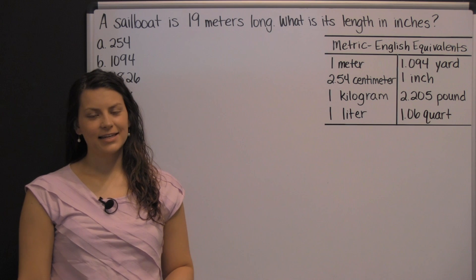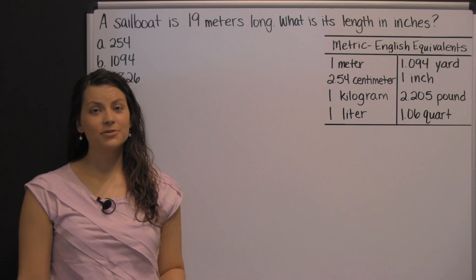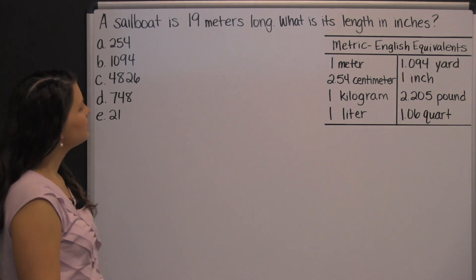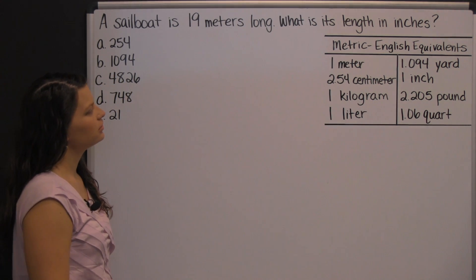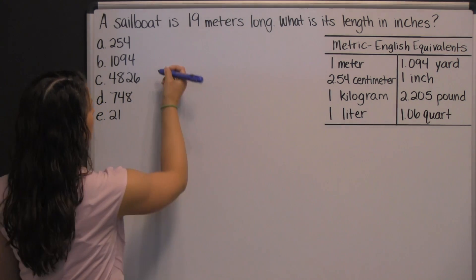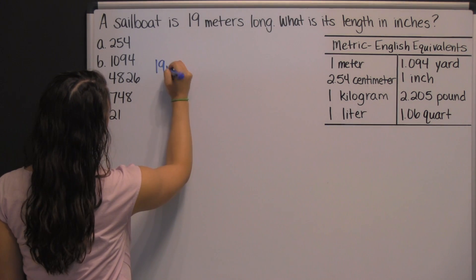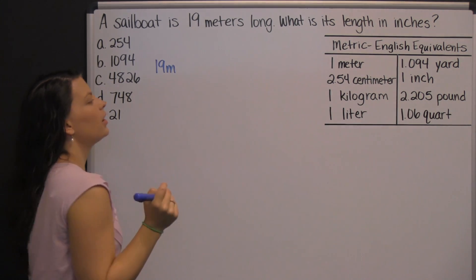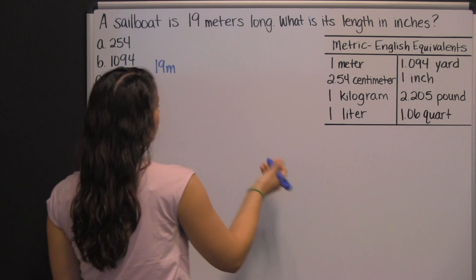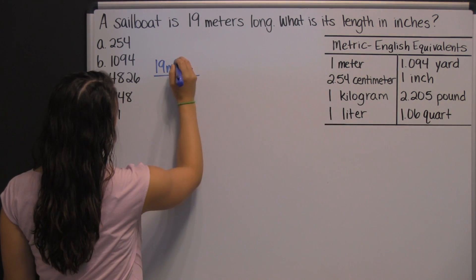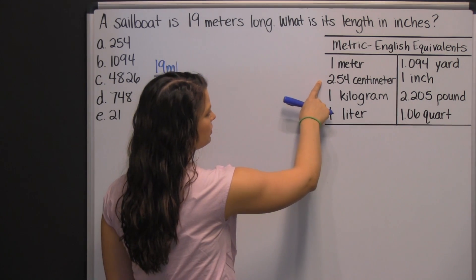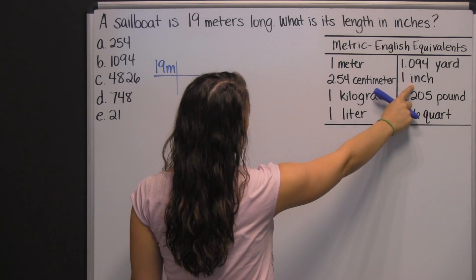If you're planning to take the HiSET exam, then you need to be comfortable with conversions. Here's an example: a sailboat is nineteen meters long — what is its length in inches? We're starting with nineteen meters, and I'm going to use dimensional analysis to convert this. We have a chart here to help us. We want to convert meters first into centimeters, so that we can then convert centimeters into inches.